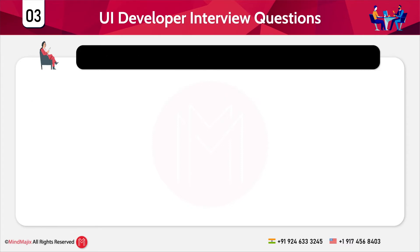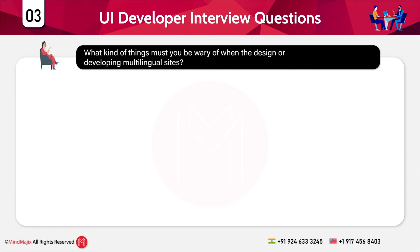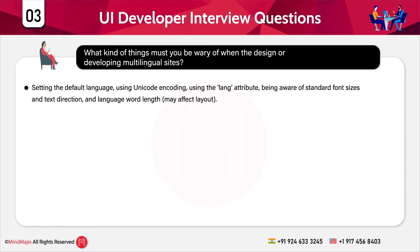The next question is: what kinds of things must you be aware of when designing or developing multilingual sites? Multilingual sites are websites in one or more languages. You can set the default language using Unicode encoding, use the lang attribute, and you should be aware of standard font sizes, text direction, and language word length.